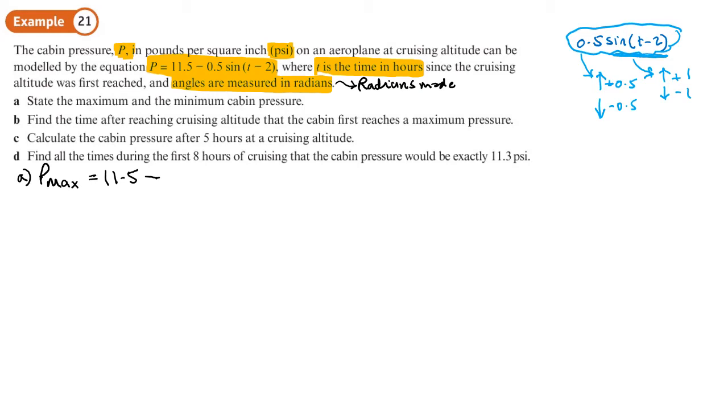And then that gets multiplied by 0.5. So the whole of this can either only go up to 0.5 or down to negative 0.5. So the maximum pressure is going to be when I subtract actually the negative 0.5 to get 12 psi. And the minimum pressure is going to be when I subtract actually the maximum value of sine t minus 2, which is going to be 1 times by 0.5. So I need to subtract that value. So 11 psi. So we've got our answer for part A, 12 and 11 psi.